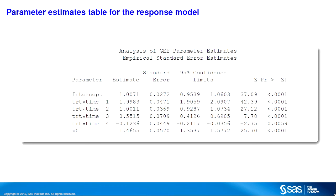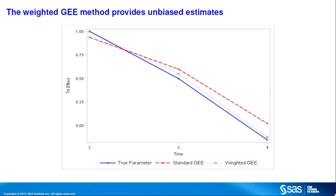Because the data are simulated, you can plot the estimates from the standard and weighted GEEs against the true values. In this figure, the estimates obtained from the weighted GEE are shown in green, the estimates from the standard GEE are shown in red, and the true values are shown in blue. Note the bias in the parameter estimates from the standard GEE. The weighted GEE provides unbiased estimates close to the true values.